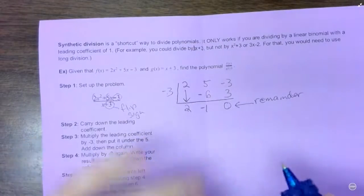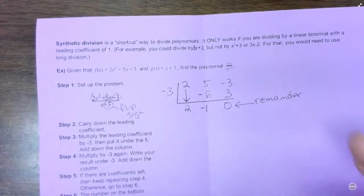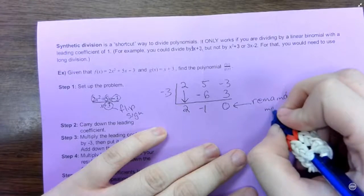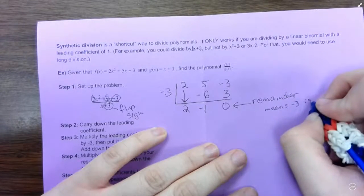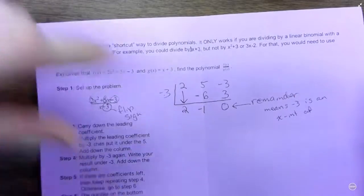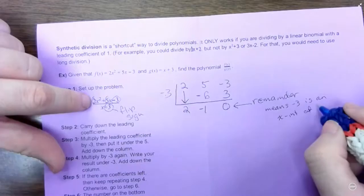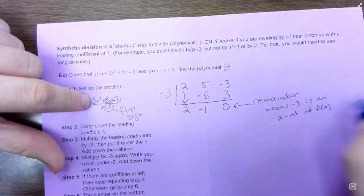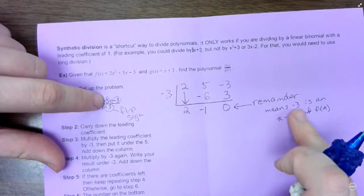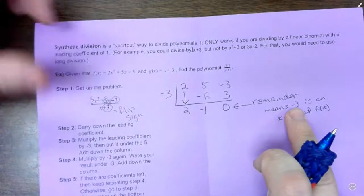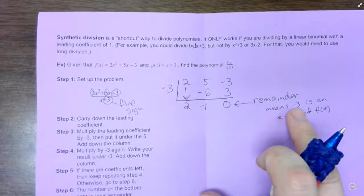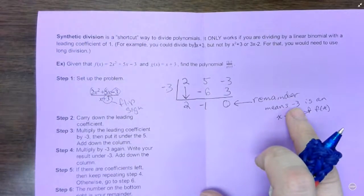And if your remainder is 0, and we'll talk more about this next week, but just to get it into your heads a little bit, this means negative 3 is an x-intercept of this one, of f of x. So if you were to graph 2x squared plus 5x minus 3, you would see that it crosses the x-axis at negative 3. And again, don't worry about memorizing that right now, but just kind of keep that in the back of your mind. It'll come up next week.